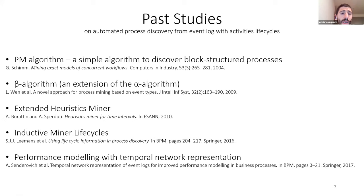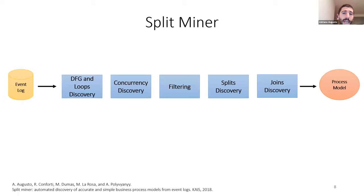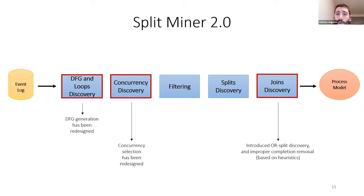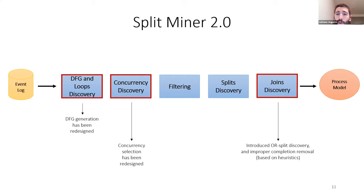However, looking at the results and adaptations proposed by those studies, we couldn't find anything usable in the context of Split Miner, so we decided to design something for Split Miner to improve it. Split Miner is based on five steps, each including a specific algorithm. In this study, we redesigned three of these steps: first, the way we generate the directly-follows graph; second, the way we discover concurrency between activities; and finally, we introduced a heuristic to discover OR splits and remove improper completions.